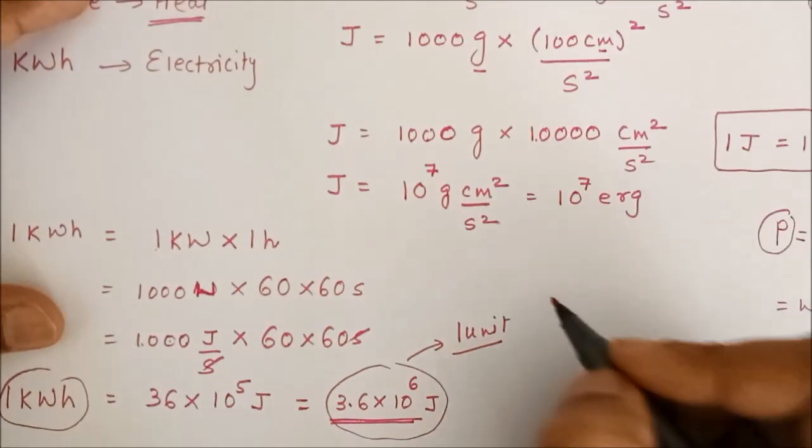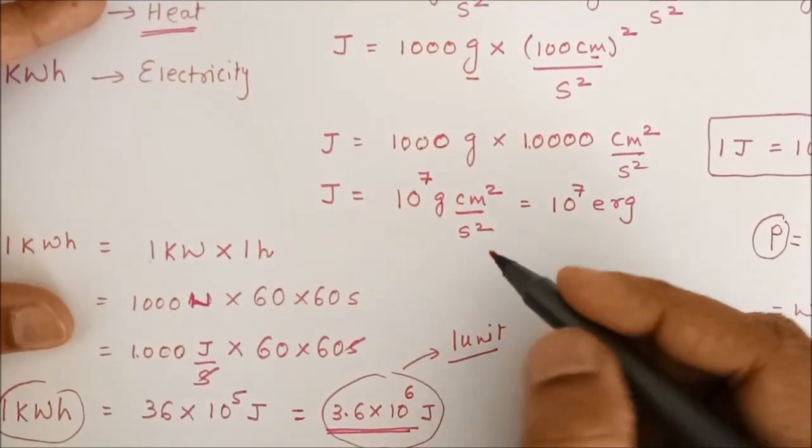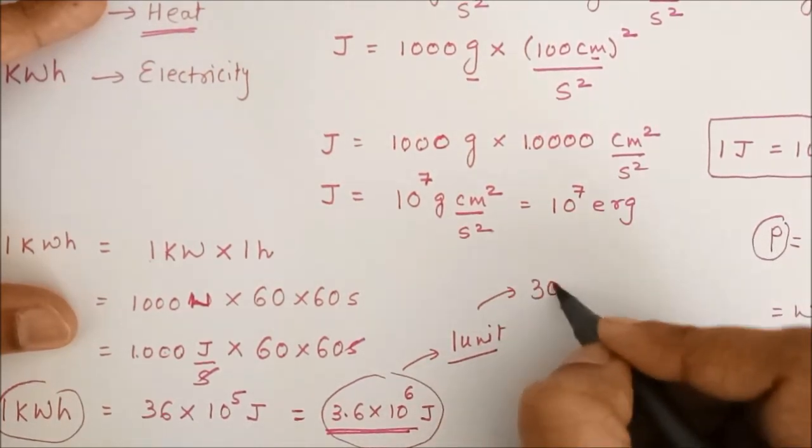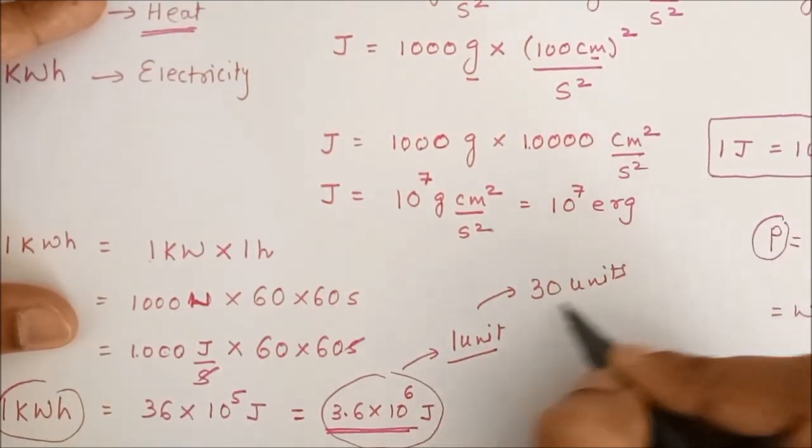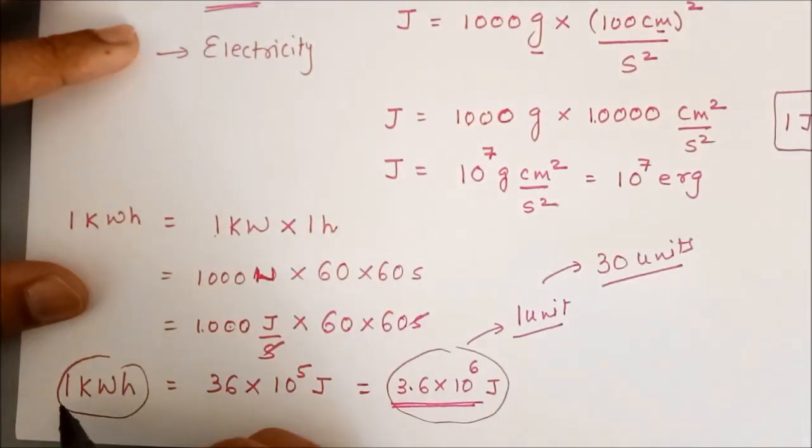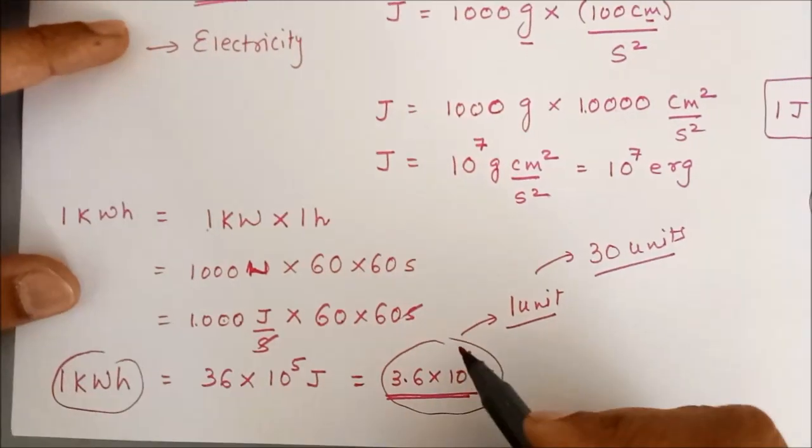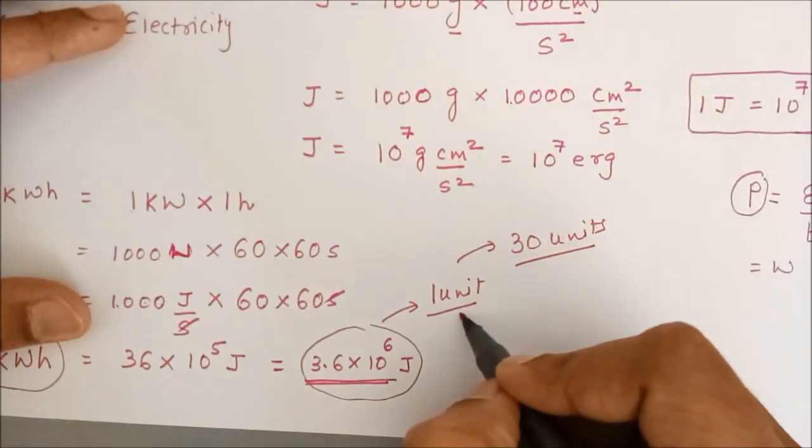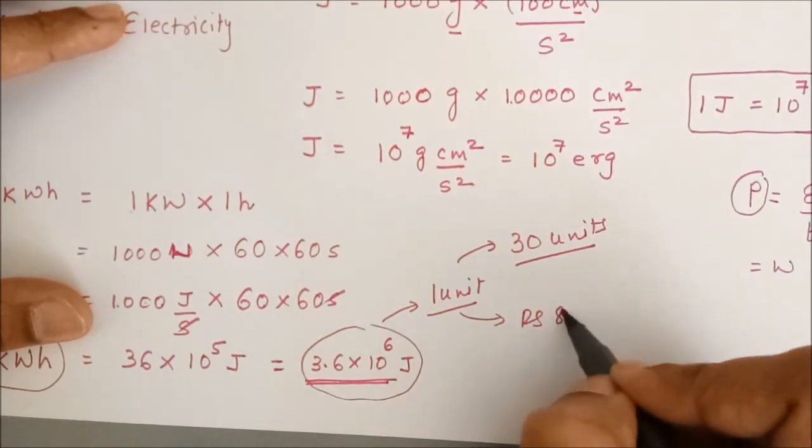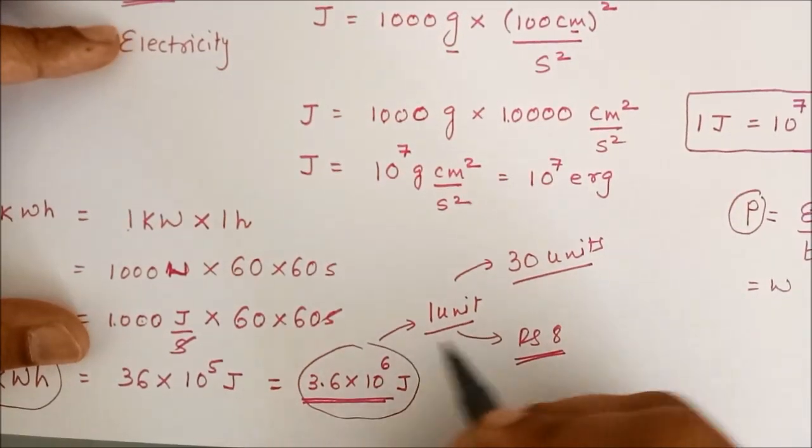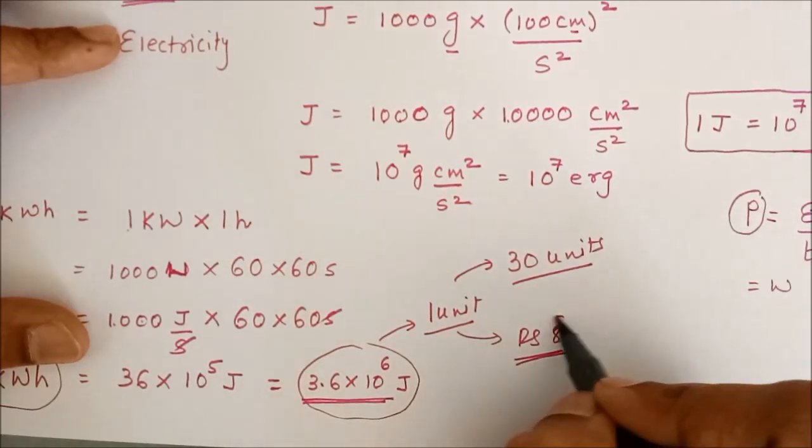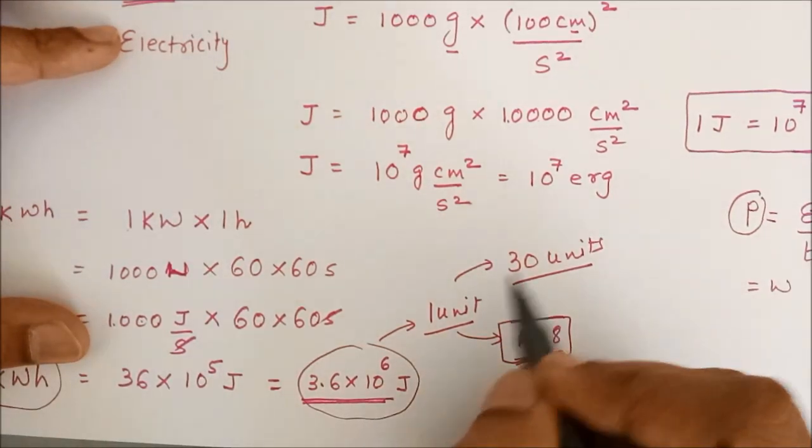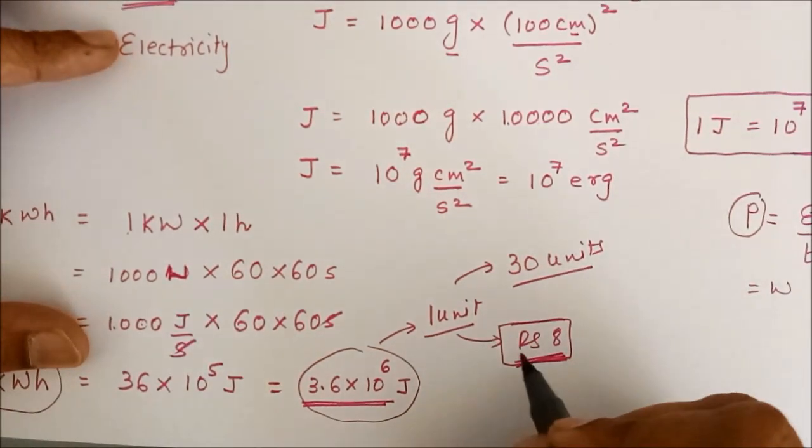So, when you look at your electricity bill, it is written that in the past month, you have used 30 units. So, 1 unit means you have used 1 kilowatt hour of electricity or you have used these many Joules of electricity and 1 unit is roughly rupees 8. So, if you use 1 unit electricity, you have to pay 8 rupee to the government. In the same way, your electricity bill is also prepared on these calculations.